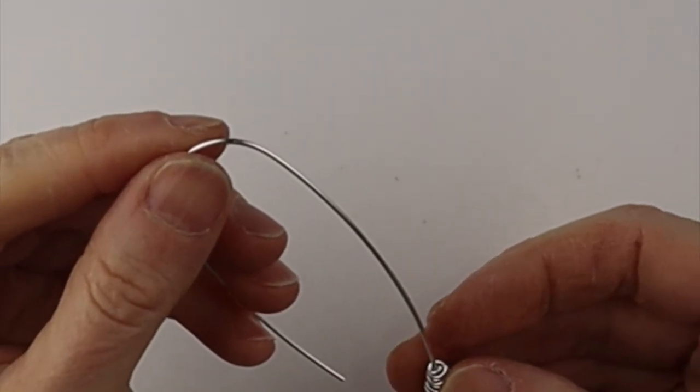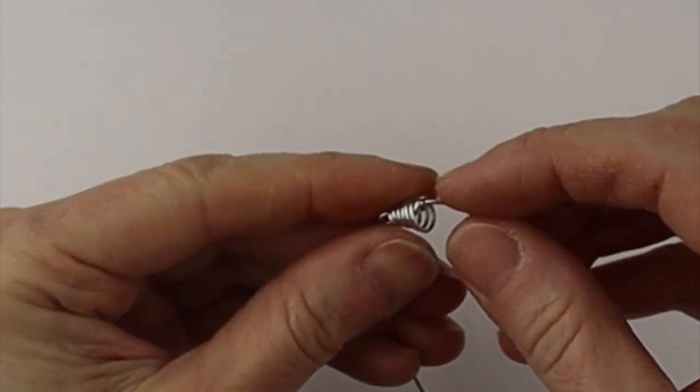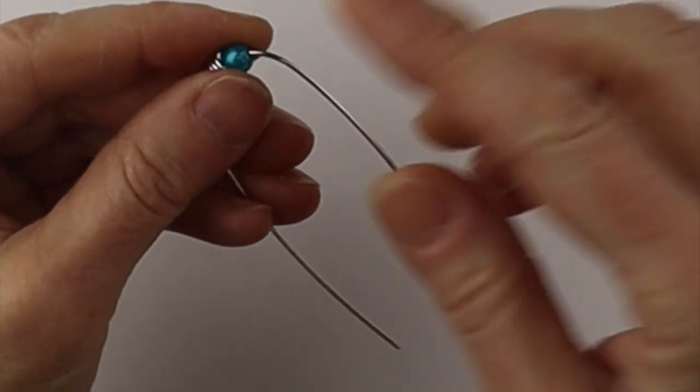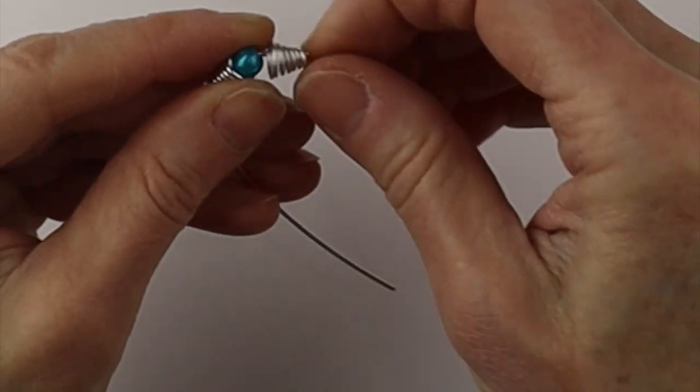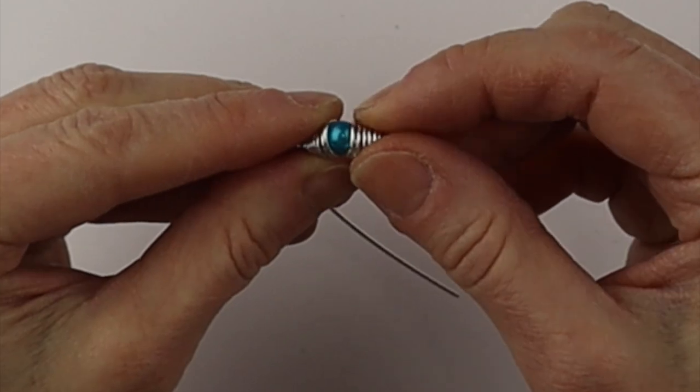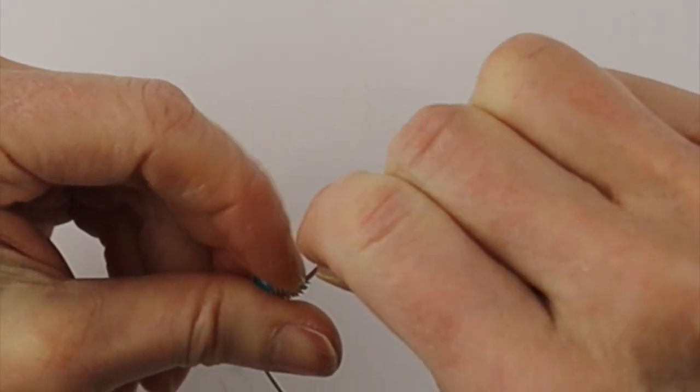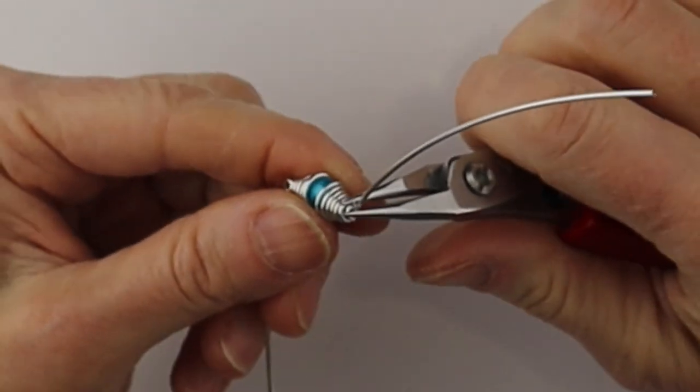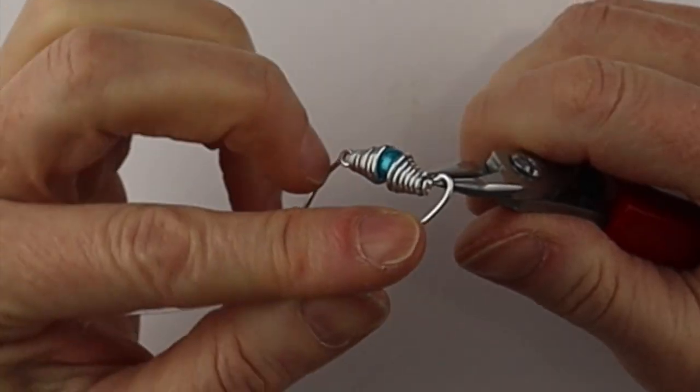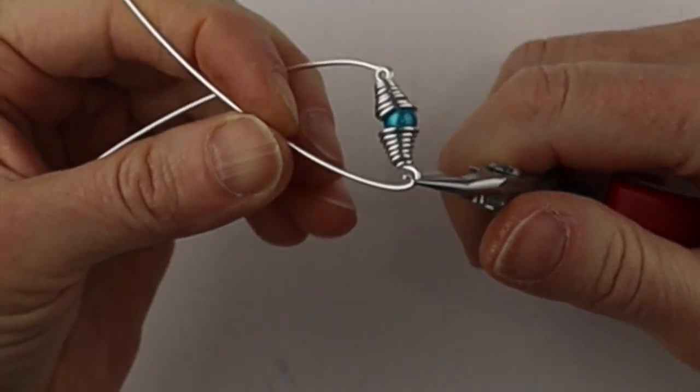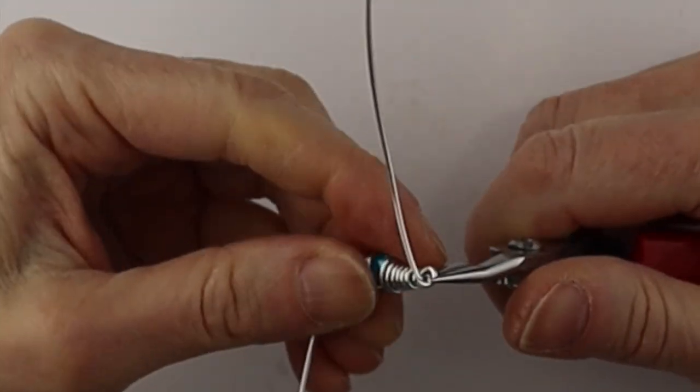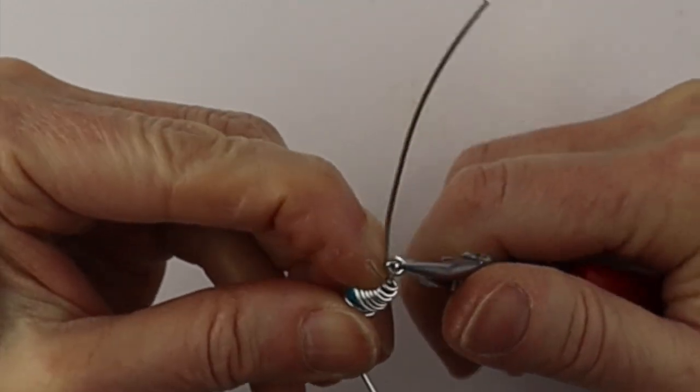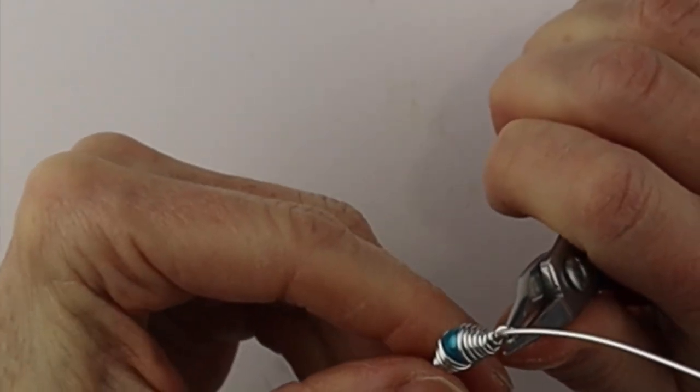And now we're going to slide on our coiled cones and this time I'm going to use a six millimeter bead, you can use six or eight, six is just a little smaller. Bend the wire up on a bit of an angle to secure it in place and take your round pliers and wind the wire around to make a loop. This will hold everything together snugly on the ring band.